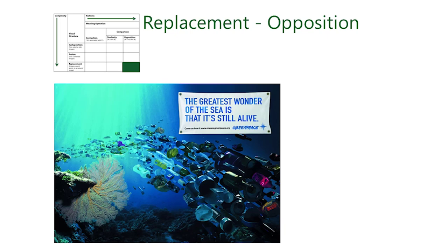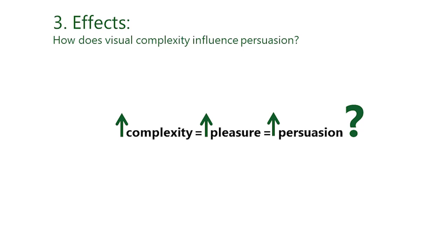So far, we have seen how to categorize different types of visual rhetorical figures. But do these types also differ in their persuasive effects? Particularly the visual complexity dimension has received attention from research. Some scholars argued that more complexity leads to greater persuasion. The underlying assumption is that increases in complexity produce greater tension, because the image places higher cognitive demands on the recipient. The resolution of the image puzzle should therefore be more rewarding — the more effort it costs to interpret the rhetorical figure, the more pleasure its processing may yield.